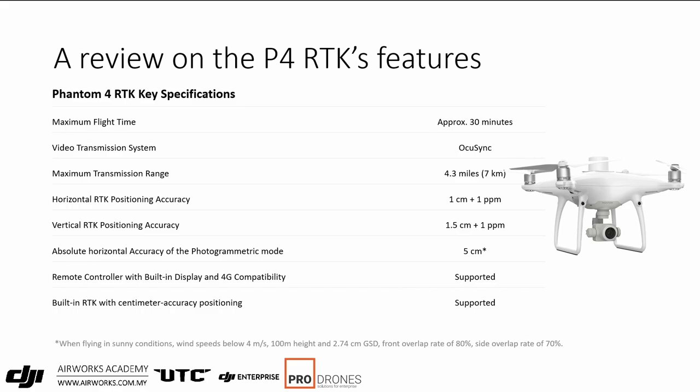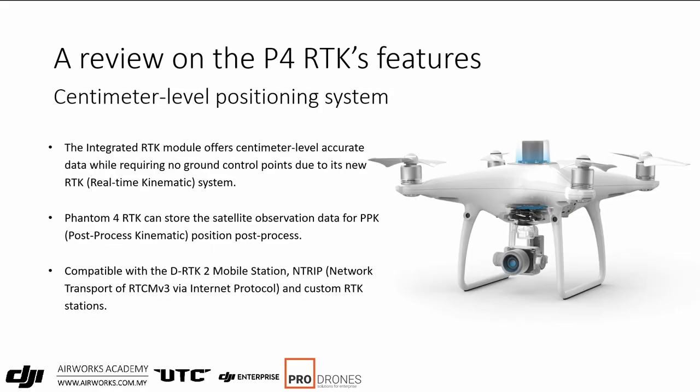With the RTK system you get not only 1cm accurate position measurement, but you can also position the drone accurately. The RTK module has its own unique points — you can do real-time correction and store it with every image in the EXIF data. You can also store the RINEX data for PPK processing. Correction data can come from the DRTK2 mobile station, an Ntrip correction network, or a custom RTK station such as Trimble — recently people have also been using the EMLID system.